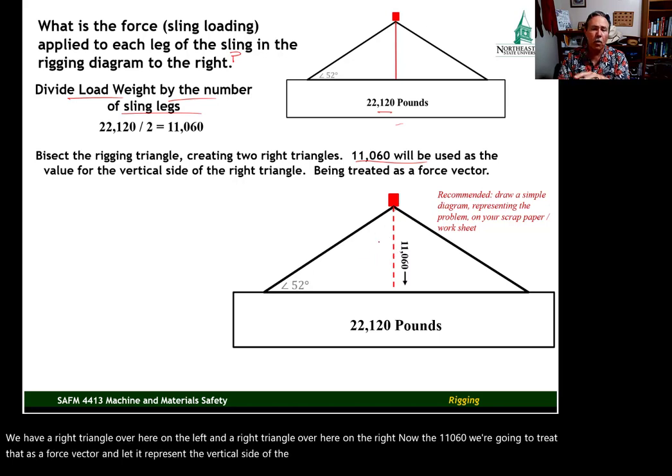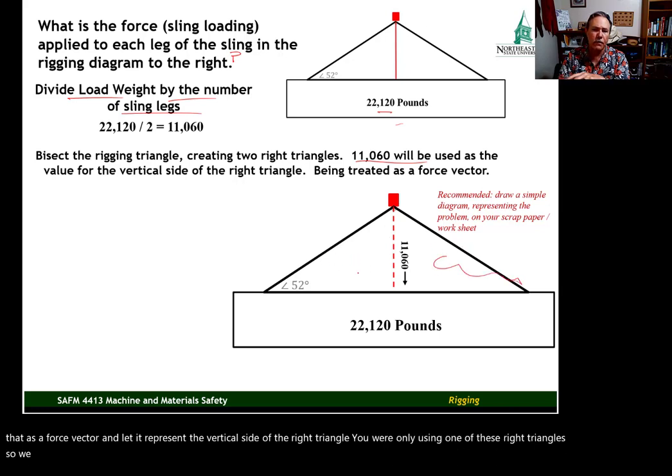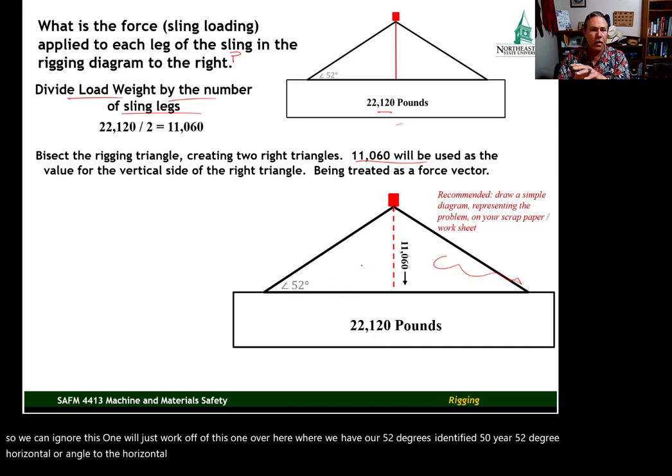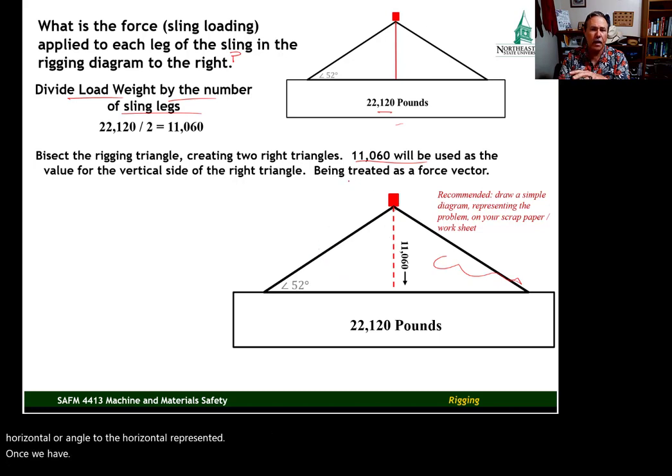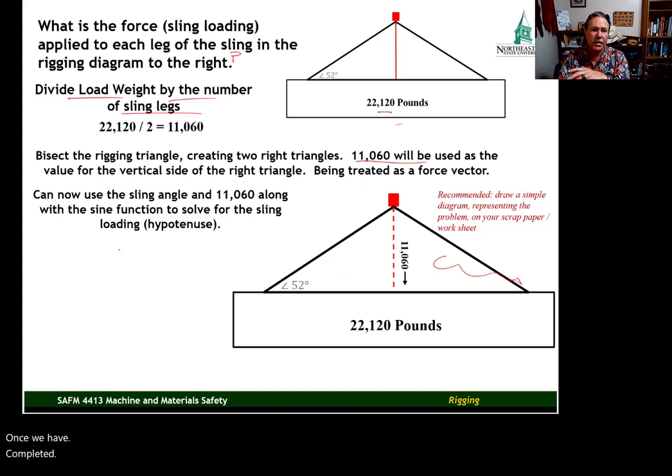Once we have completed these steps, the next step is simply using the sine function along with the sling angle and the 11,060. We can use those two values with the sling angle, or with the sine function, to calculate the sling loading, which will be the hypotenuse.